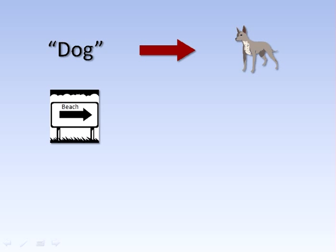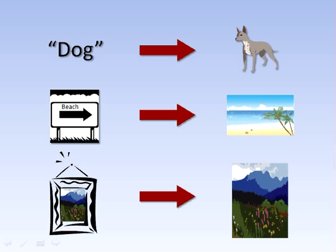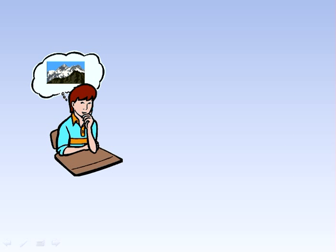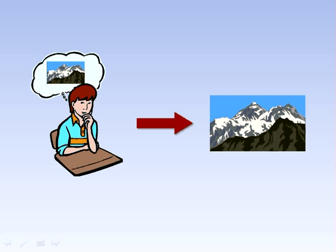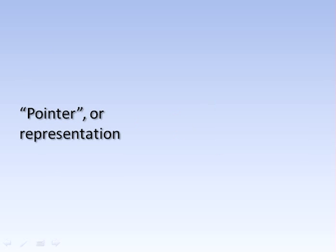To take a few examples: the word 'dog' refers to or points to its referent, actual dogs. An arrow literally points to whatever its intended reference, such as a beach. A picture points to its subject matter, and a thought about, say, Mount Everest points to its referent, Mount Everest. With intentionality, we have a relationship between two items: the pointer or representation, and the referent or target being pointed to. There are some peculiar aspects of intentionality that make it a complicated relationship.